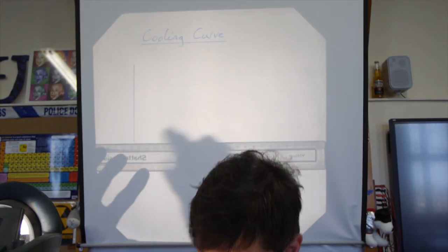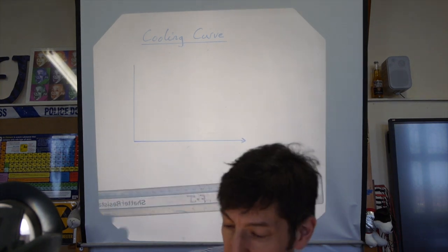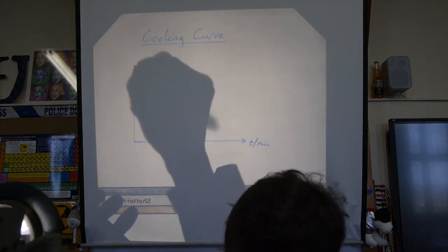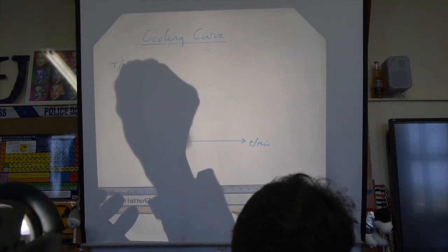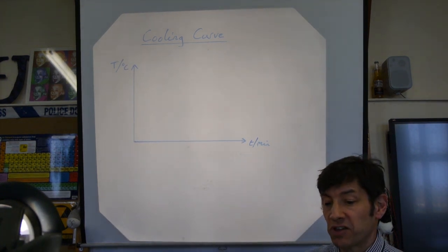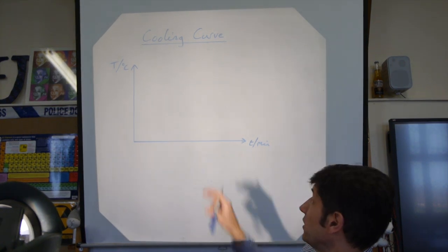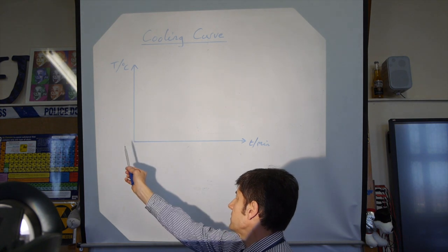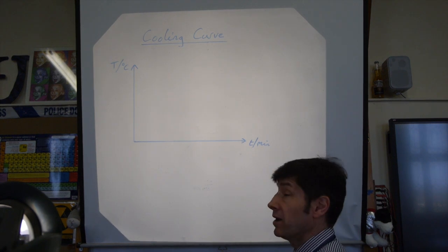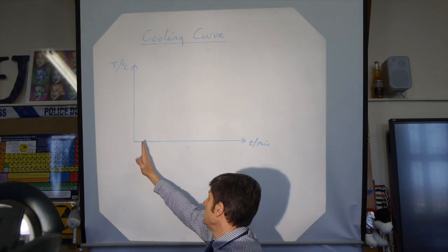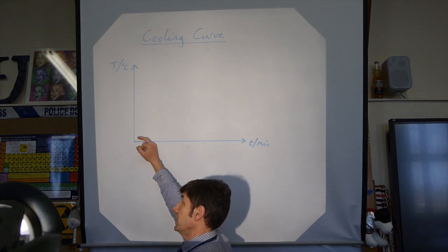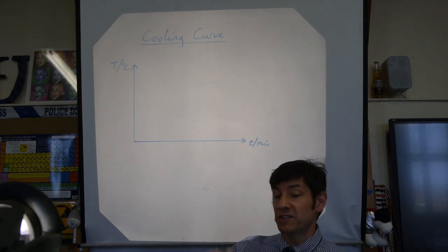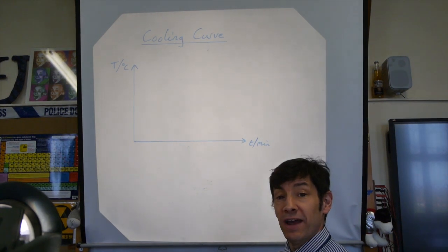The independent variable is time, measured in intervals of two minutes — so time in minutes on the x-axis. The dependent variable is temperature in degrees C on the y-axis. Pause the video and draw yourself a graph. You can start the temperature scale at around 20 or at naught. Remember the numbers must go up evenly: two, four, six, eight or five, ten, fifteen, twenty — even spacings between them.